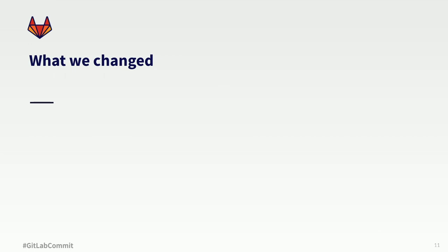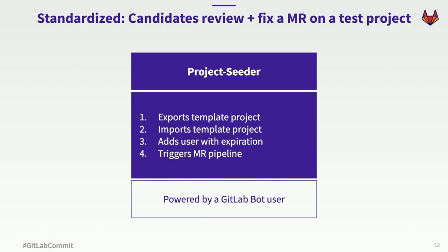So what did we change? How did we use GitLab? The first thing we did was standardize — standardize on candidates reviewing and fixing a merge request on a test project. We created a test project for candidates to fix up and review to see their thought process and coding. We implemented an open source project called Project Seeder that goes through the process of seeding the project for each candidate: it exports the template, imports it, adds the user with an expiration date, and triggers the MR pipeline for the candidate to review. All of this is powered by a GitLab bot user so each interviewer doesn't have to manage API keys — it's all streamlined.